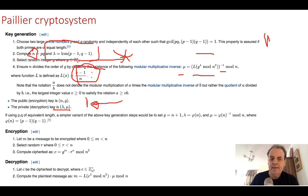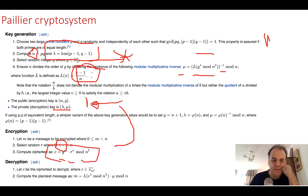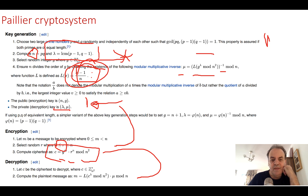We cipher our values with the public key and decipher with the private key. To encrypt, we take our message m and a random number r up to n, then compute g to the power of m multiplied by r to the power of n, all mod n squared. To decrypt, we take the cipher c to the power of lambda mod n squared, apply the L function, multiply by mu, and take mod n.